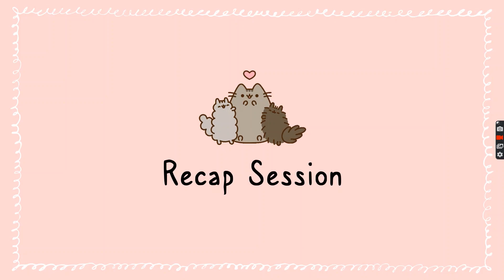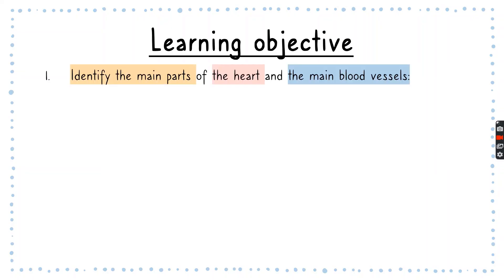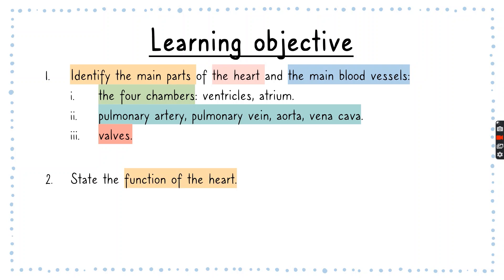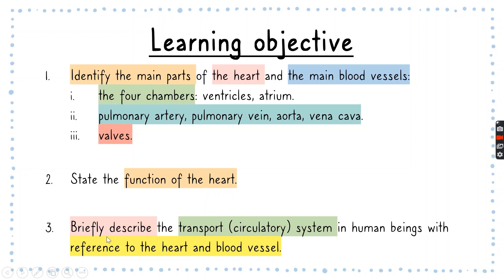Let's do a recap session from the previous lesson. The learning objective before was to identify the main parts of the heart and the main blood vessels. We need to know about the four chambers, the valves, the arteries, and the veins — the aorta and vena cava. These are the blood vessels. We also needed to state the function of the heart and briefly describe the circulatory system in human beings with reference to the heart and the blood vessels.